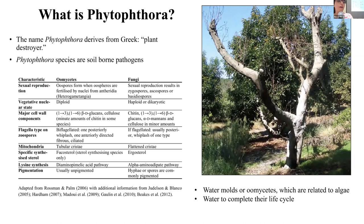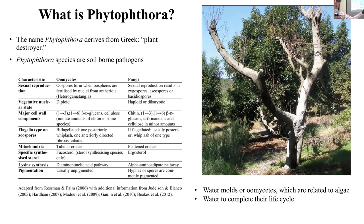What is Phytophthora? Phytophthora is actually a genus comprised of more than 600 species — a group of microorganisms that are plant pathogens. They have a wide host range, and the name Phytophthora has a Greek root meaning "plant destroyer." It resembles fungi, but it's not true fungi. It's mostly related to brown algae or a group of microorganisms called oomycetes. We call them water molds because they need water to complete their life cycle. These pathogens are soil-borne, though there are differences between oomycetes and fungi.